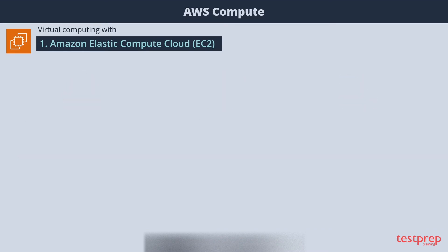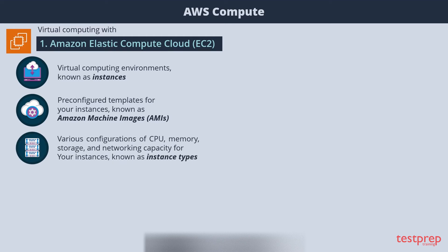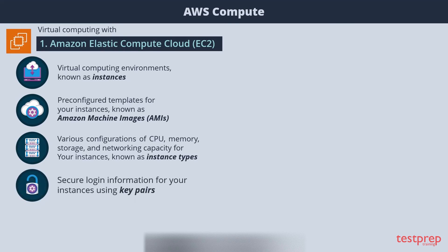EC2 is basically Amazon's virtual machine. It offers virtual computing environments known as instances. EC2 has both Windows and Linux-based instances. There are pre-configured templates for your instances known as Amazon Machine Images. It has various configurations of CPU, memory, storage, and networking capacity for your instances, known as instance types. For security, it uses key pairs for secure login information for your instances.